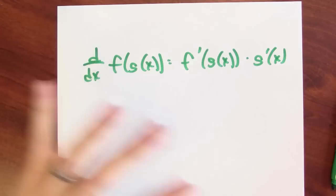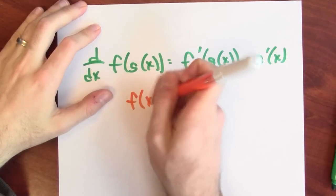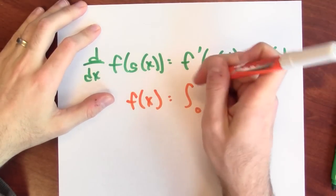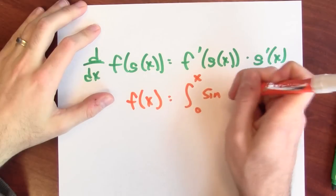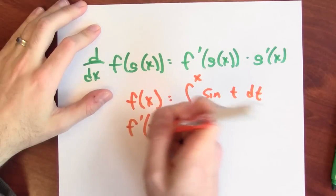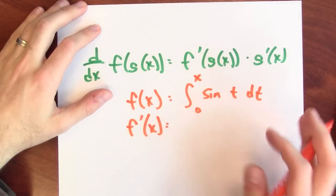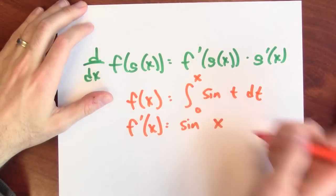So what does it mean in this specific case? Remember, in this case, f of x is the integral from 0 to x of sine t dt. So the derivative of f by the fundamental theorem is sine of x.